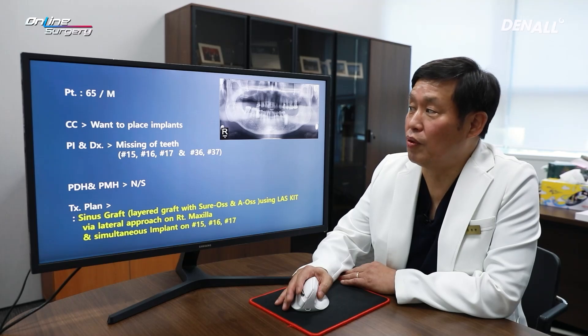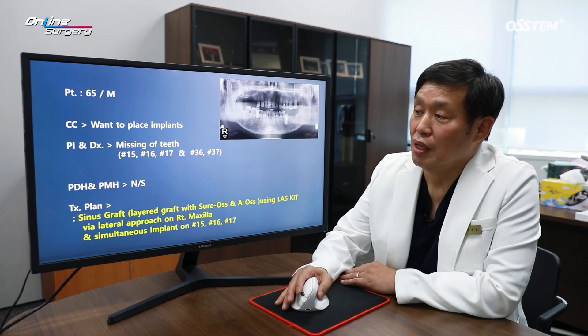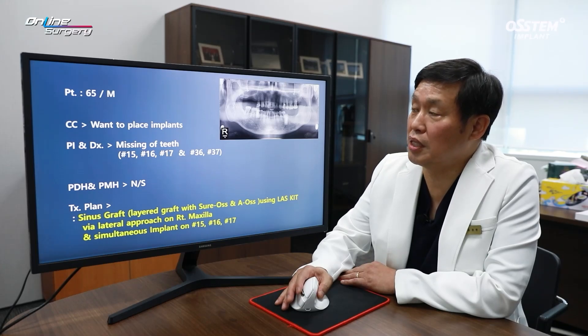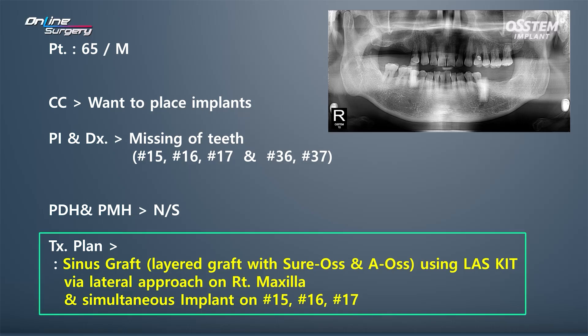The patient wanted implant treatment and wanted to receive surgery on the upper right first, then proceed with surgery on the lower left after that. There is no special history in terms of PMH or PDH. For the upper right, a sinus graft along with the lateral approach should be done. The Last kit will be used for the surgery.